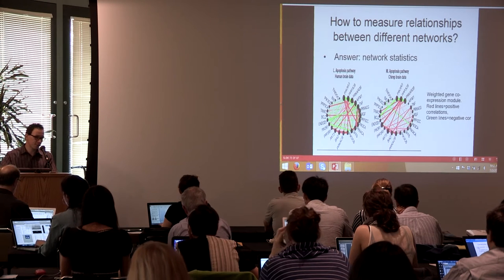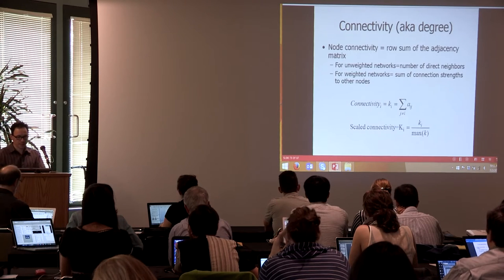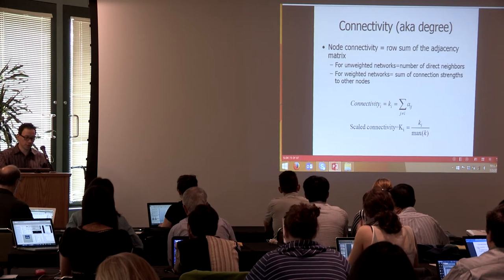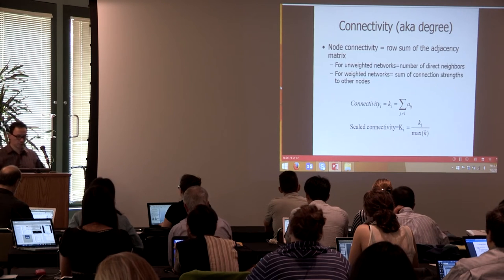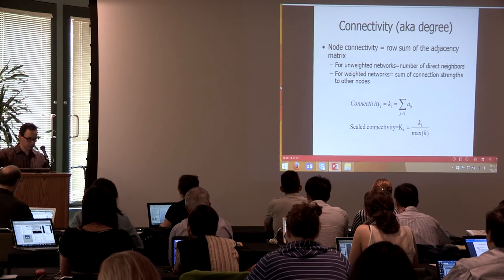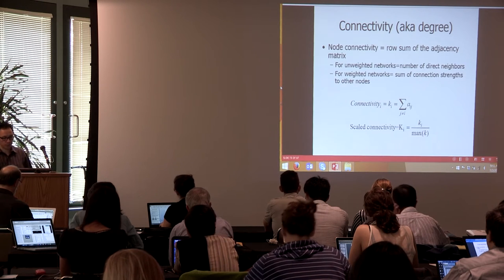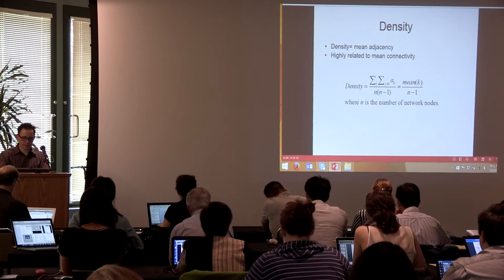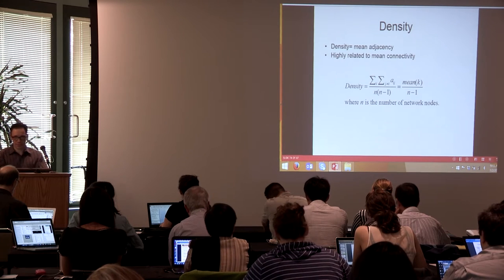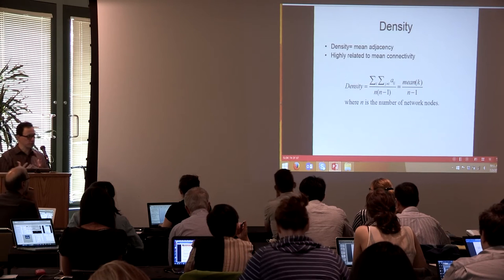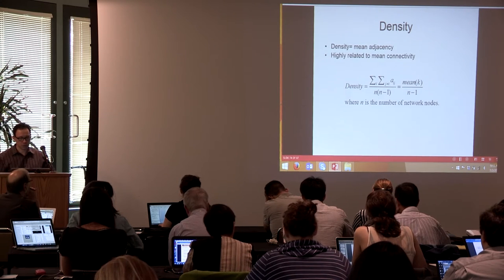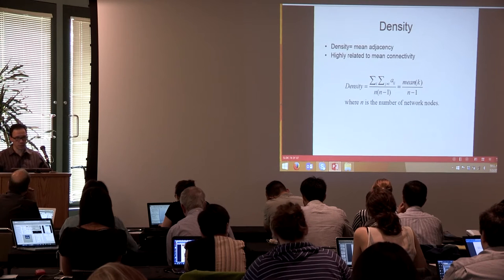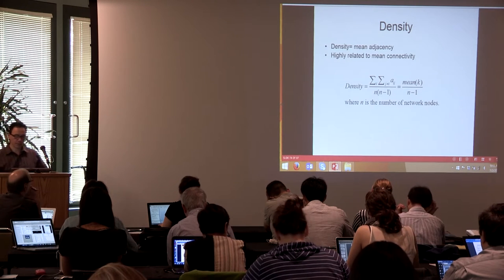When we have statistics that measure properties of a network, they are called network statistics or network concepts. The most famous is node connectivity — the sum of adjacencies of gene i with all other genes, essentially the number of friends. Another statistic we haven't discussed yet is density, which measures how densely connected genes are inside a network — mathematically, the average of off-diagonal elements of the adjacency matrix, related to mean connectivity.